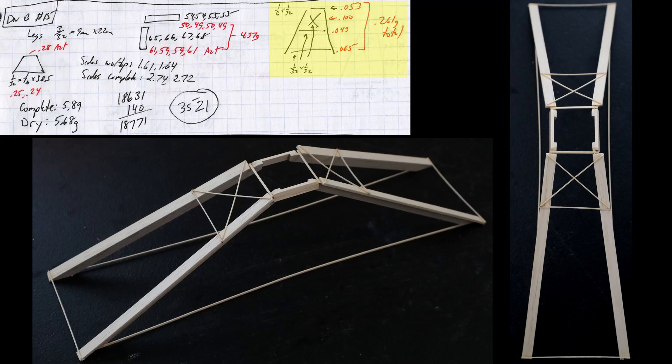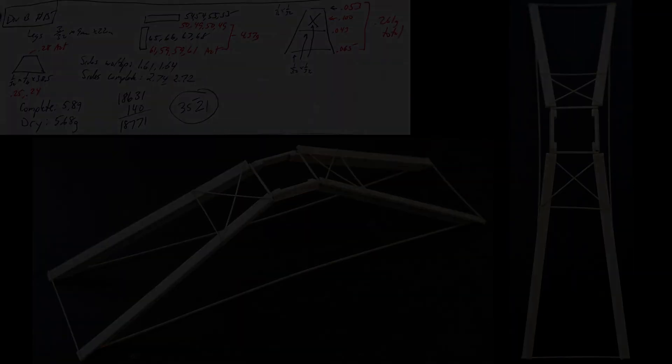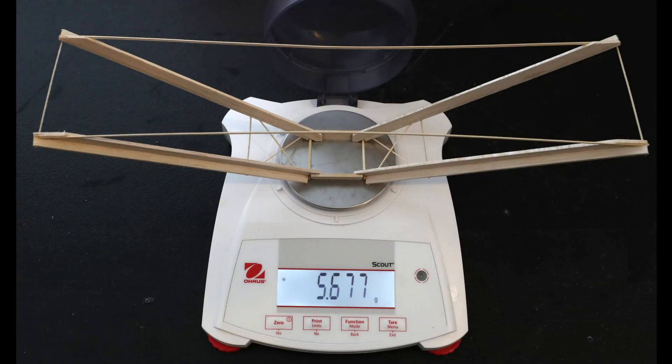All the cross members for this build except for the very top piece were made from 1/32nd by 1/32nd bass. The top piece needed to be a little stronger and was 1/32nd by 1/16th bass. The entire weight of all the cross pieces were 0.261 grams. I also like to record the completed size with and without the top part of the leg glued on just to compare from build to build. Here is the final result after being in a simple dry box for a day or two and the weight is 5.68 grams.